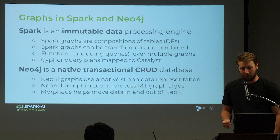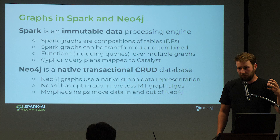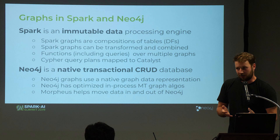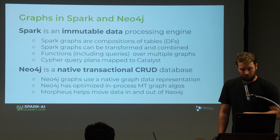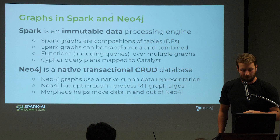Spark has immutable data structures, and we compose graphs out of immutable data frames. That means we are bound to Spark's capabilities — we can transform graphs and combine them, but we cannot add arbitrary nodes. What we do is basically compile our Cypher query to Spark SQL, which then gets optimized by Catalyst.